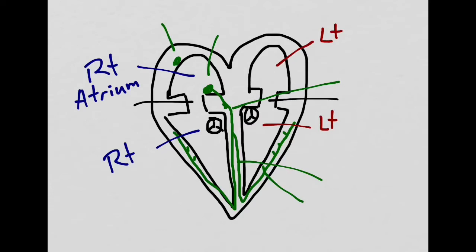The next chamber is the right ventricle. This will receive the blood from the right atrium and then push it to the lungs to receive oxygen.